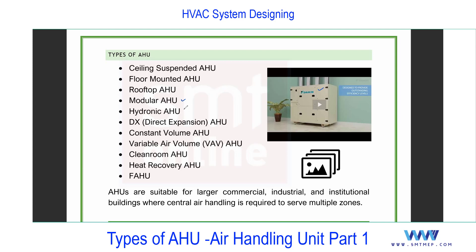Next we have the modular AHU, which is new in the market. Next is the hydronic AHU — hydronic means the AHU uses water as the source of supply, not refrigerant. Hydro refers to water, so this is connected to the chiller. Next is the DX AHU. For the hydronic AHU, chilled water is supplied to the coil to cool the air — this is also called a water-side AHU. For DX AHU, the refrigerant is in the coil; the source of the cooling medium is different but the concept is the same, though the motor, capacity, and coil size differ.